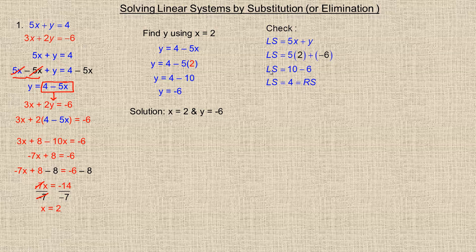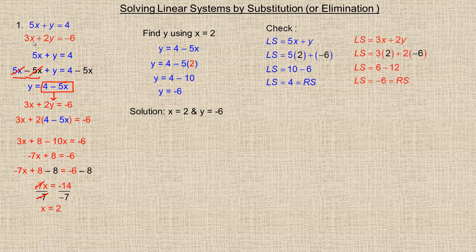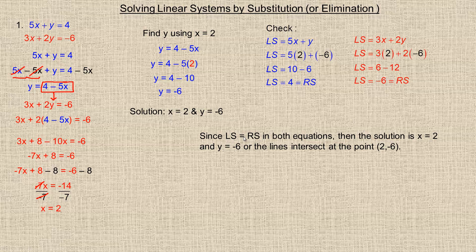For the first equation, 5x plus y: putting 2 for x and negative 6 for y gives 5 times 2 plus negative 6, which is 10 minus 6 equals 4. That equals the right side, so it checks. For the second equation, 3x plus 2y: 3 times 2 is 6, and 2 times negative 6 is negative 12, so 6 minus 12 equals negative 6, which is the right side. Since both equations check, the solution is x equals 2 and y equals negative 6, or the lines intersect at the point (2, negative 6).